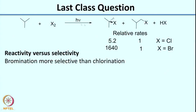In the last class, I had left you with a question. The question was about a free radical halogenation reaction where the relative rates are 5.2 to 1 when X is chloride and 1640 to 1 when X is bromide. I hope you had time to think about this question. Now let us try to reason why this is the case.